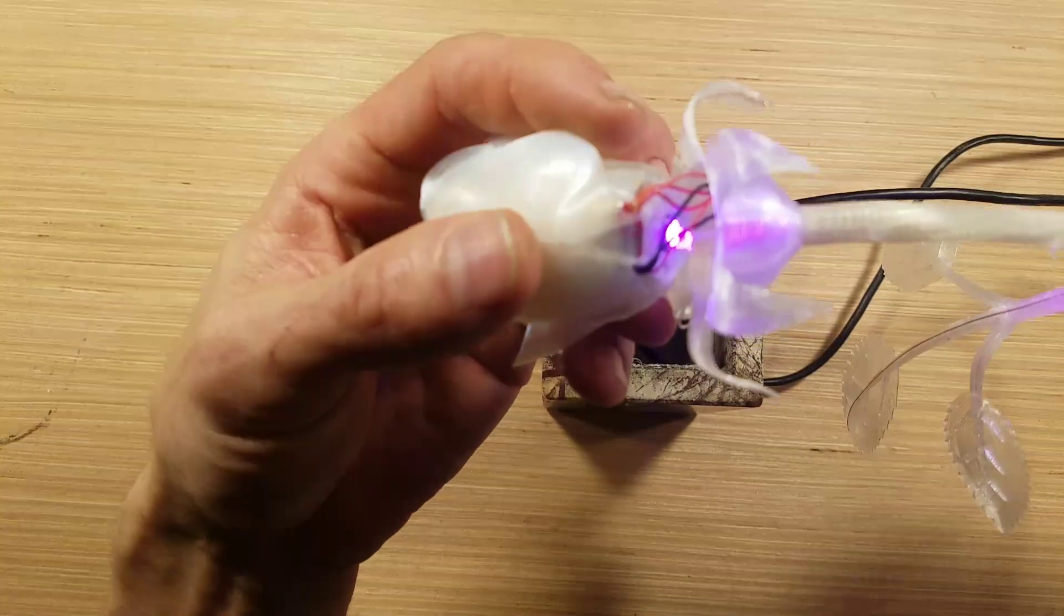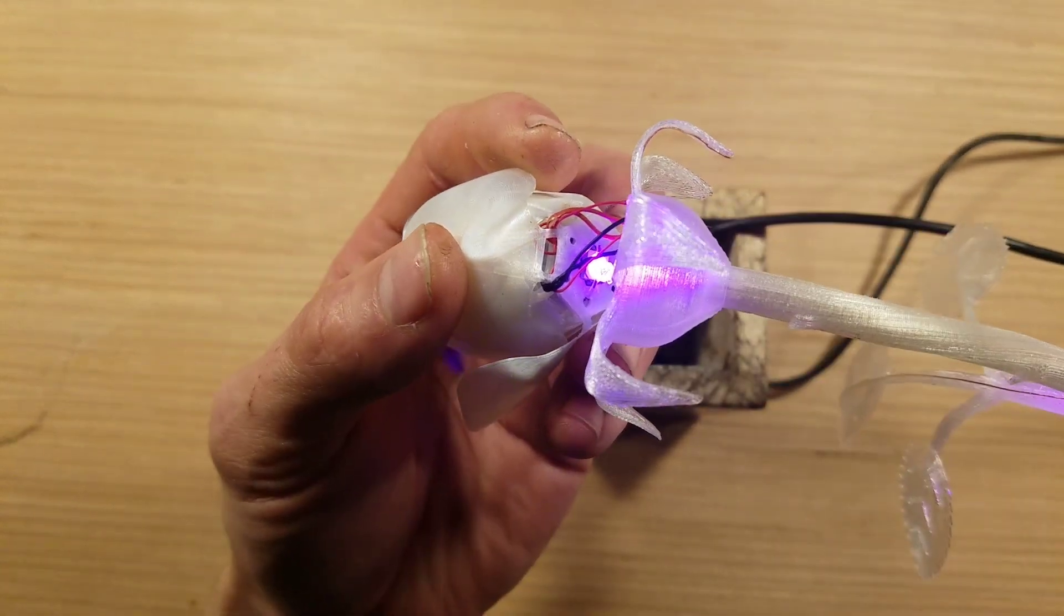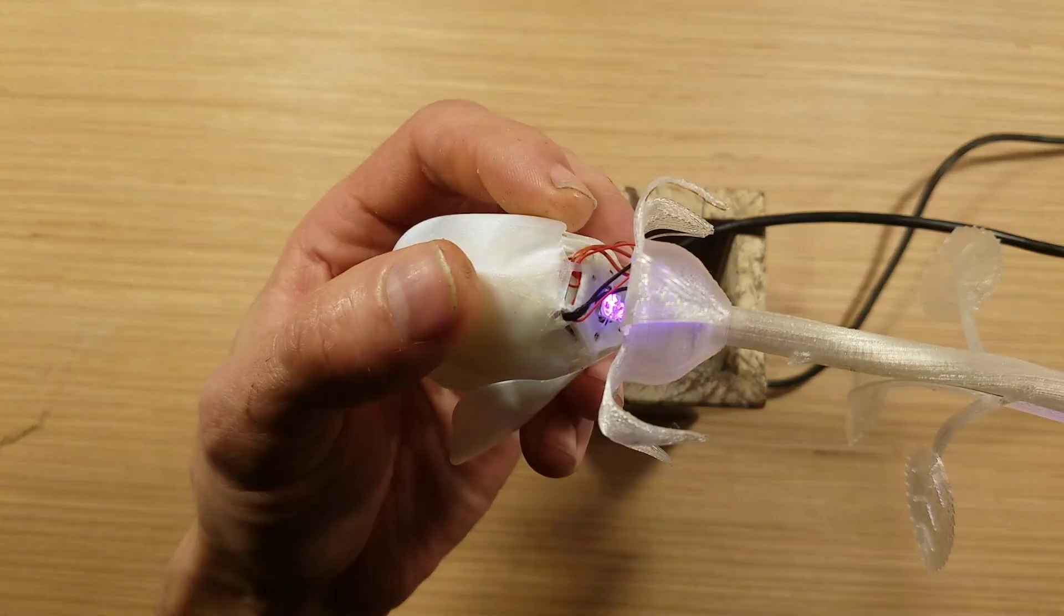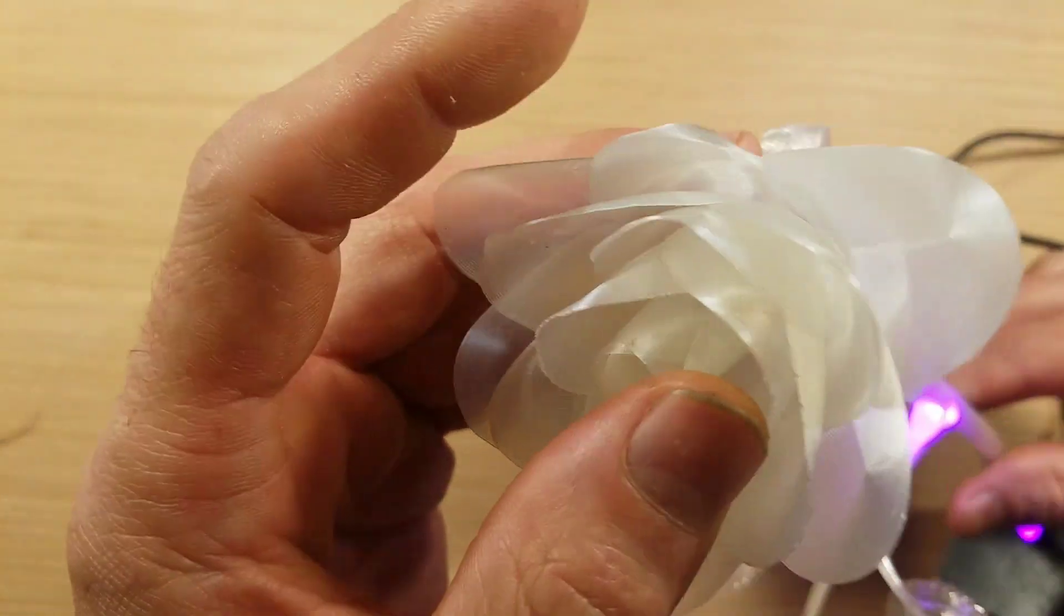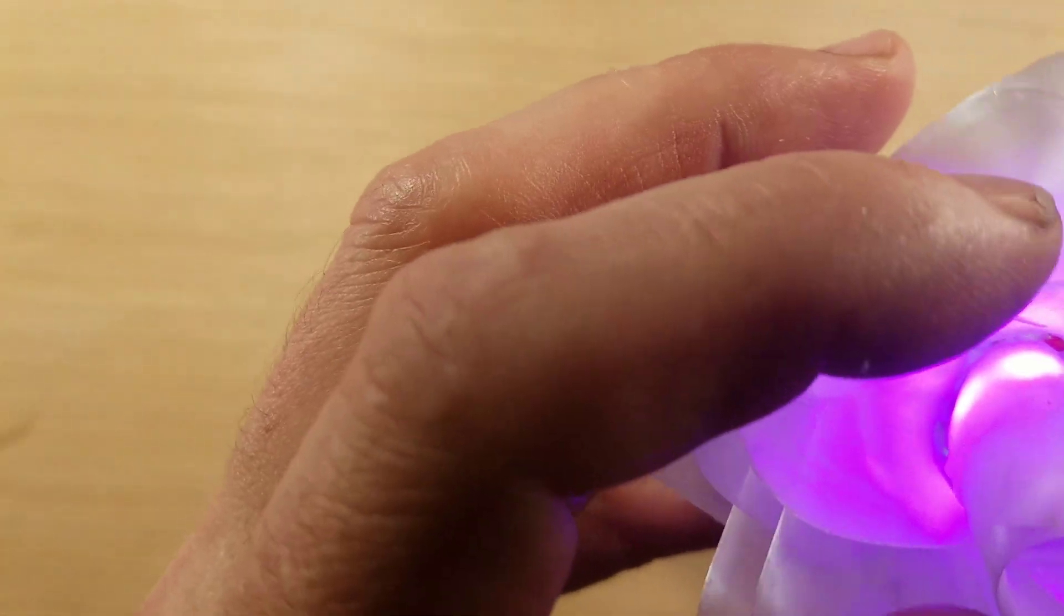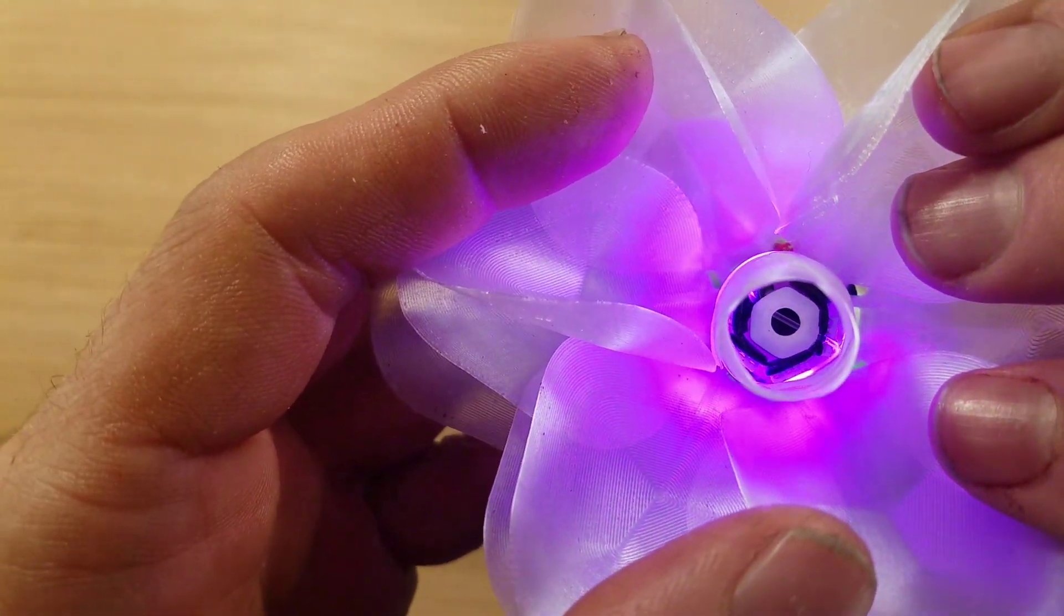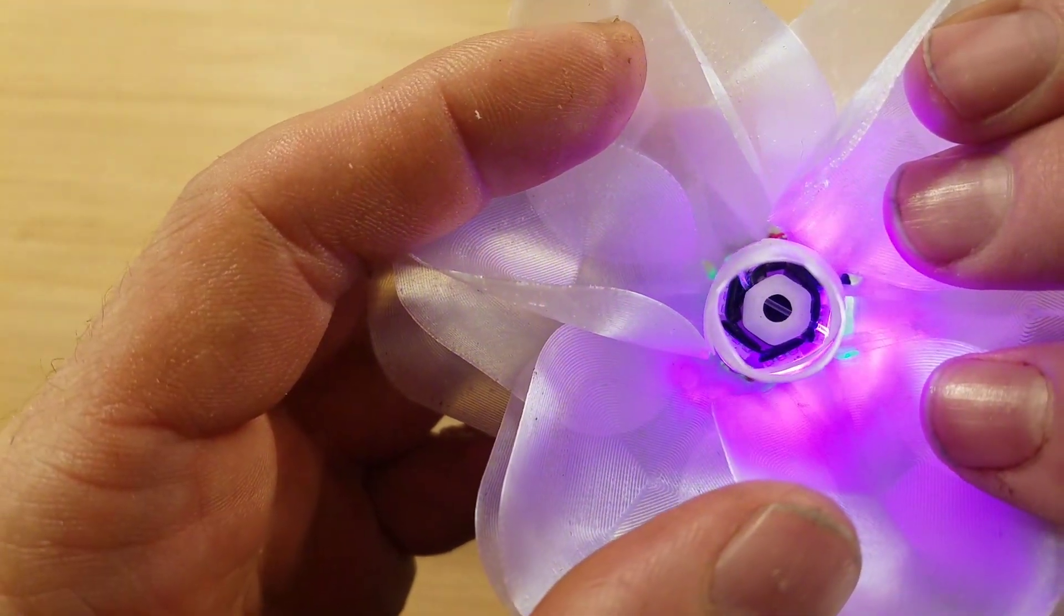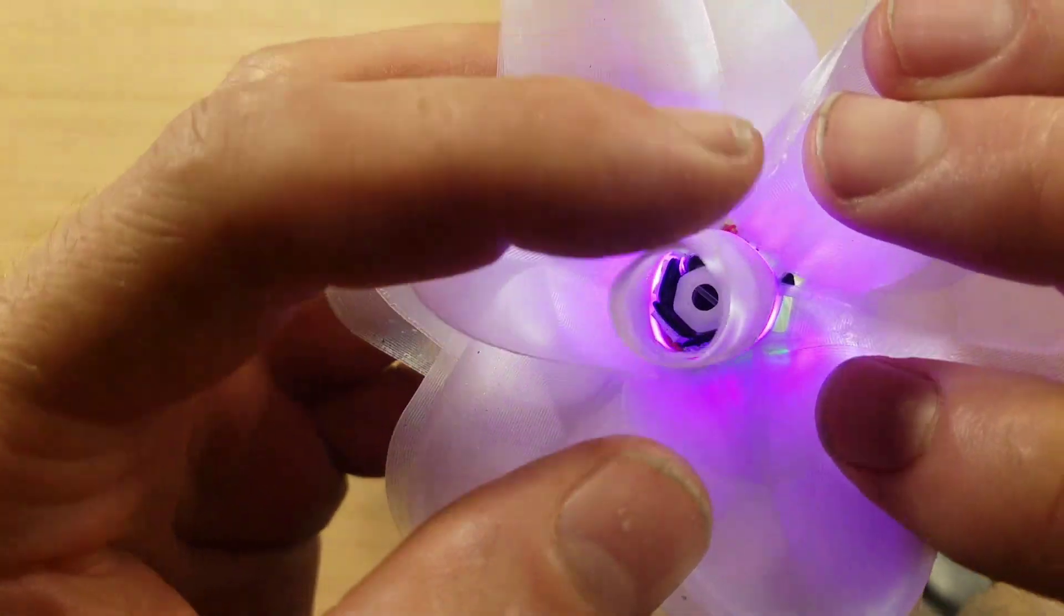can see. I've got one more dot star module showing through the bottom set of petals there, and then I've got six more dot star modules in the top of the rose just aimed out. And this